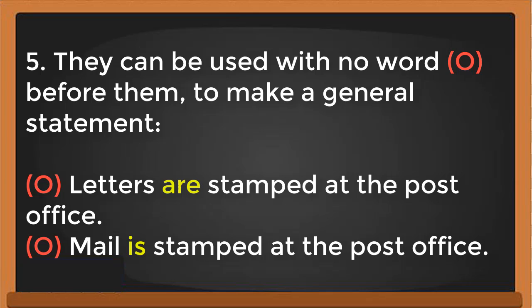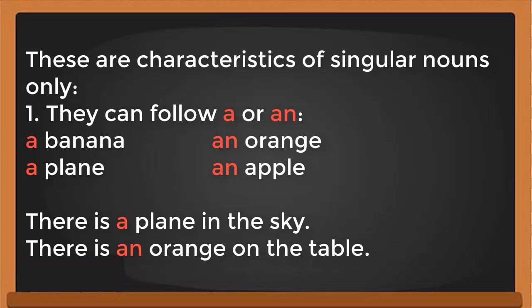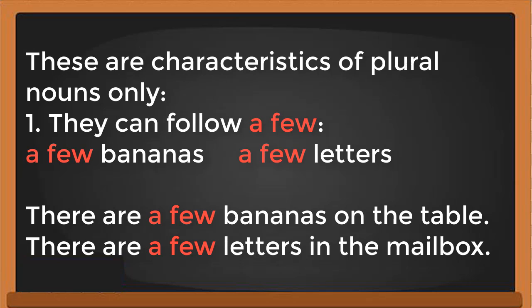Now let's look at characteristics for singular nouns only. Singular nouns can follow 'a' or 'an'. For example: 'a banana', 'a plane', 'an orange', 'an apple' — only for singular nouns. In conversation: 'There is a plane in the sky', 'There is an orange on the table'.